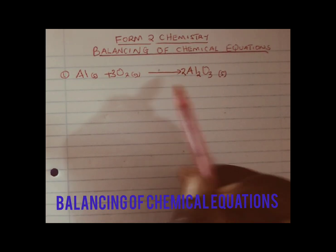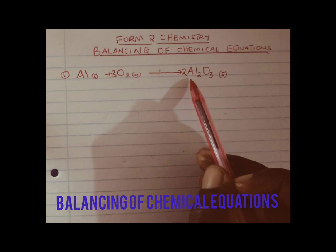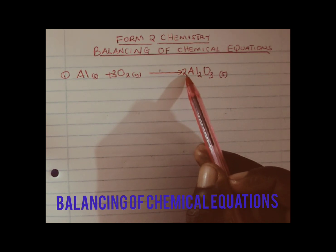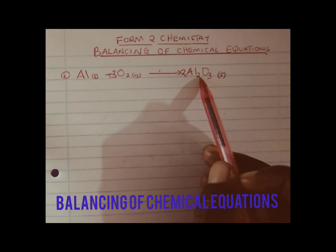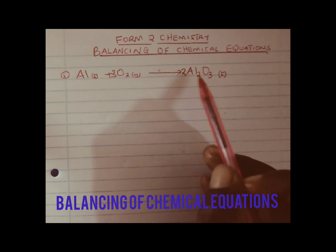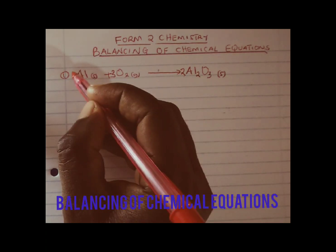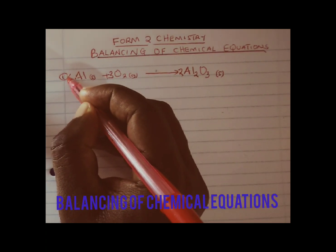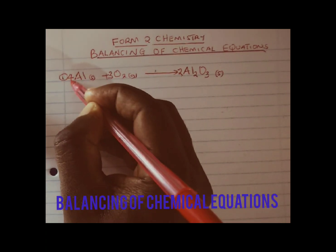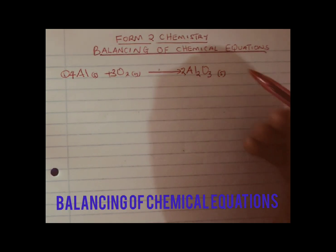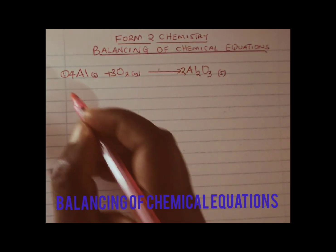We now consider aluminum. We have 2 times 2, which is 4. Here we have 1, and therefore to balance aluminum we write 4 in front of aluminum, and our equation is now balanced.